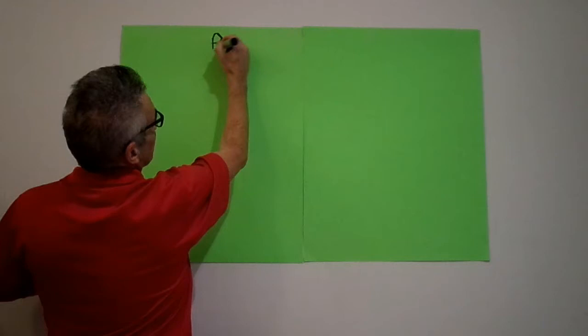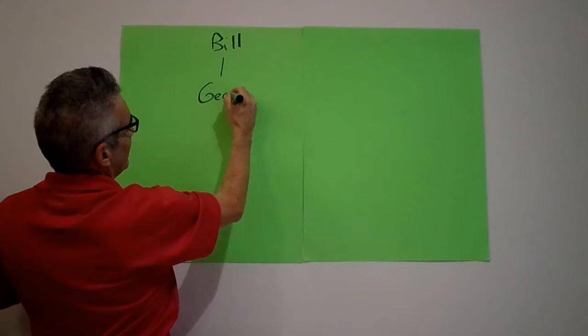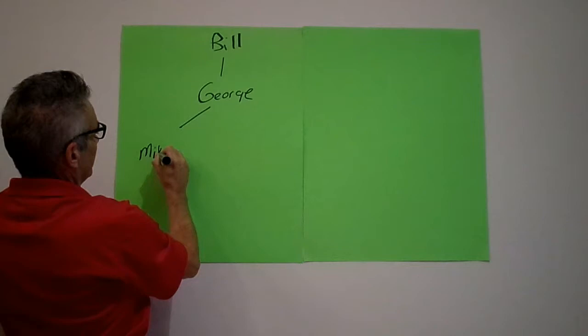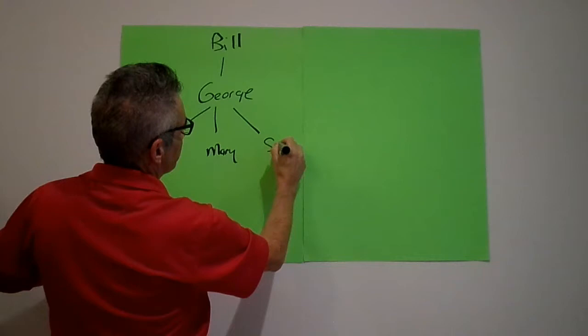Today we're talking about communication, which I feel is the most important part of building and supporting a team. Let me draw a quick team on this whiteboard, or should I say green board. Let's start with Bill. Bill sponsors George, and George sponsors Mike, Mary, and maybe Susie. Then Mary's going to sponsor Johnny.